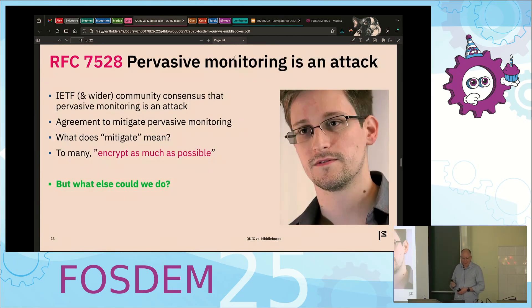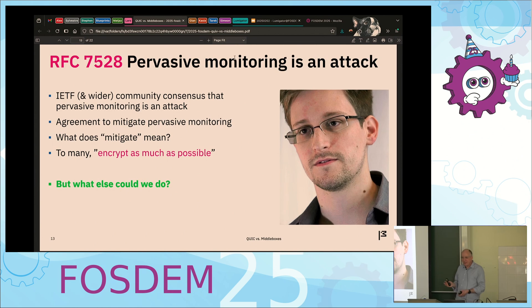And there's Snowden. At the IETF we decided — being the kings of the internet apparently — that pervasive monitoring is an attack and we're going to do something. What does something mean? We're going to encrypt as much as possible. But what else could we do? That's what we're getting to with the 'love.'